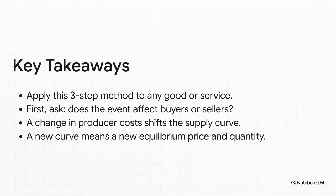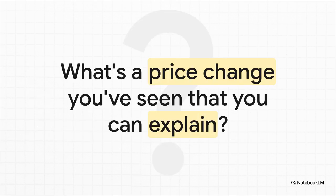So here's what you should really take away from all this. You can apply this method to anything, from gasoline to concert tickets. The most important step, the absolute key, is to first figure out whether the change impacts the buyer's side, that's demand, or the seller's side, that's supply. Once you know which curve to move, you can predict the outcome. So the next time you see a price jump, or even a big sale at the store, try running it through this three-step toolkit. You might be really surprised by the economic story you can uncover just by asking a couple of simple questions.